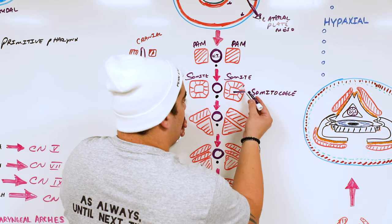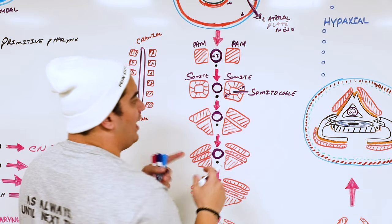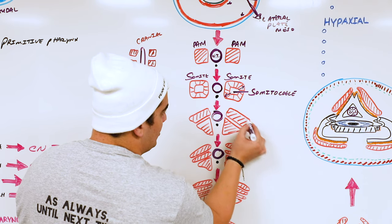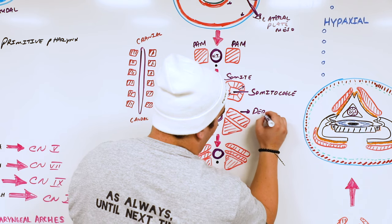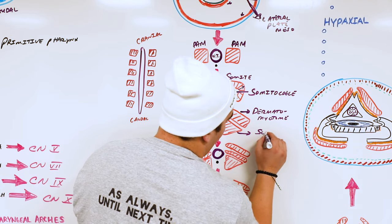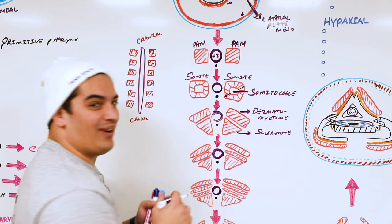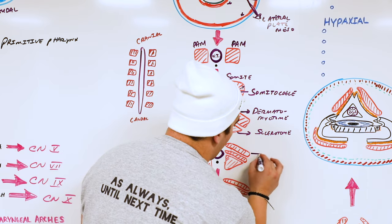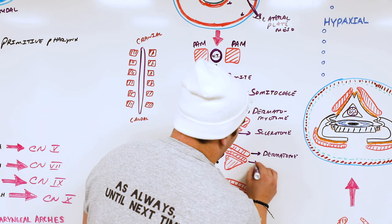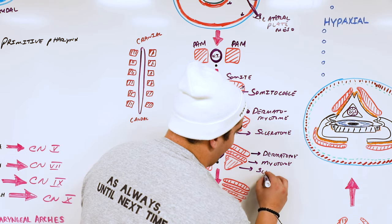As the somatocoel keeps expanding, it cuts the somite into two portions. The dorsal portion is called the dermatomyotome, and the ventral portion is called the sclerotome. The dermatomyotome then differentiates further, splitting into the most dorsal layer — the dermatome — and the middle layer called the myotome, with the sclerotome remaining the innermost ventral layer.